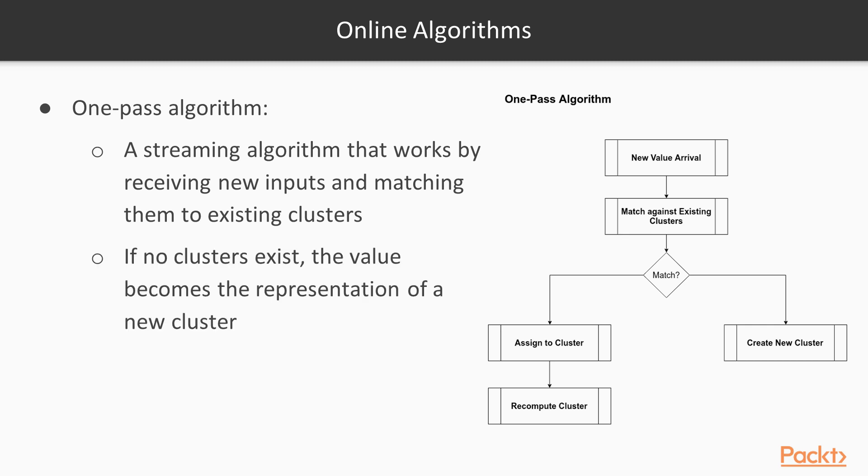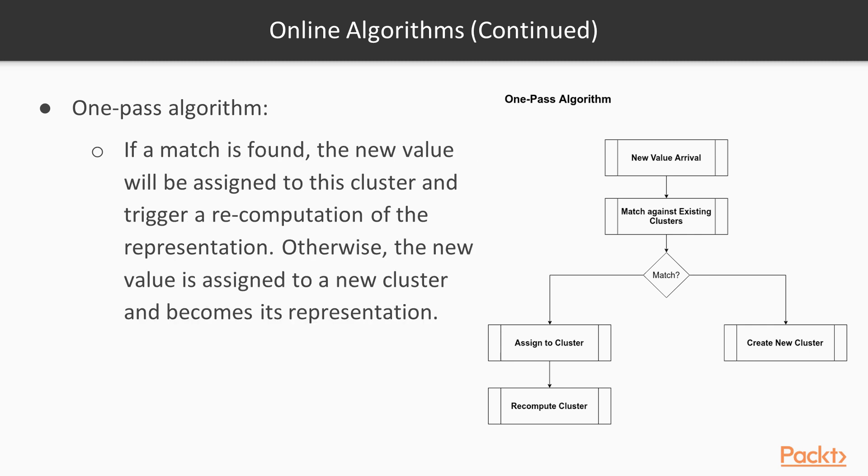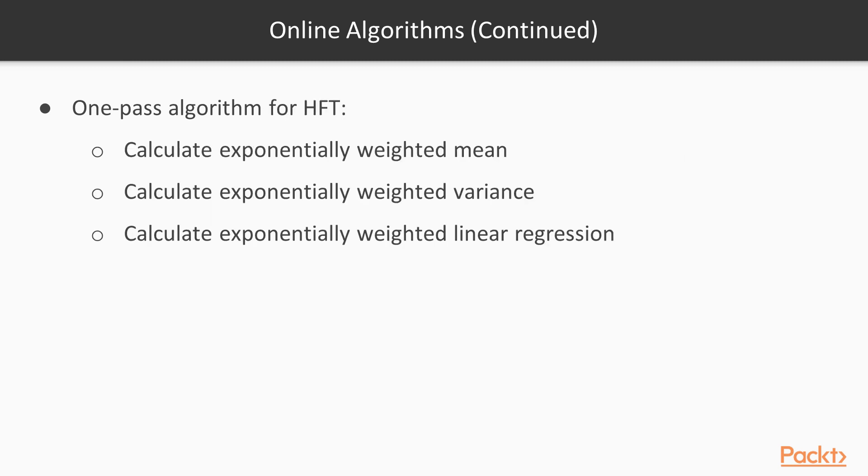If no clusters exist at the beginning, then the value becomes the representation of a new cluster. If a cluster exists, then the matching function is triggered and the new value is compared against the representation of each cluster. Finally, if a match is found, the new value will be assigned to this cluster and trigger a recomputation of the representation for that cluster. Otherwise, the new value is assigned to a new cluster and becomes its own representation.